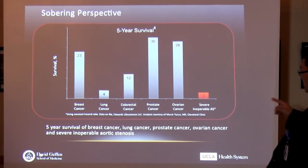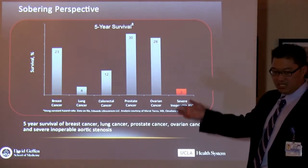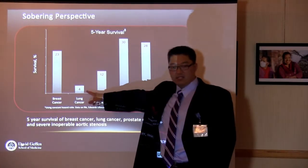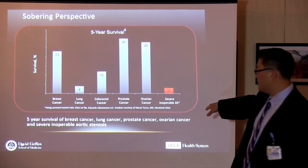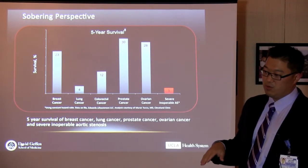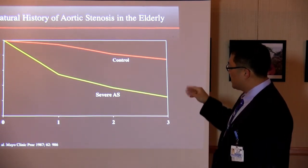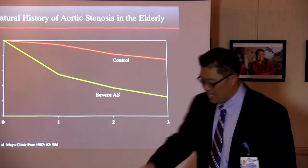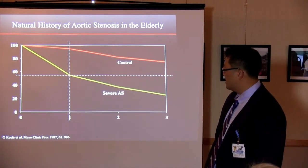Here's a sobering perspective. In patients with severe inoperable aortic stenosis — elderly patients with other comorbidities not candidates for surgery — their five-year survival is only 3%. Compare that to lung cancer, a very deadly cancer, where five-year survival is 4%. Patients with severe inoperable aortic stenosis had a worse prognosis than lung cancer patients. From the Mayo Clinic data, it's estimated that at one year untreated, an elderly patient has about 50% mortality. So it's very important to diagnose this correctly and treat it appropriately when a patient has symptoms.